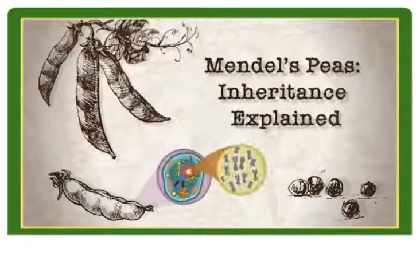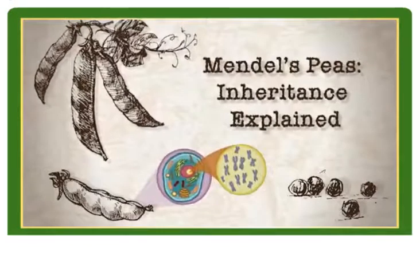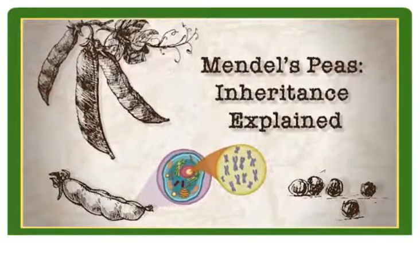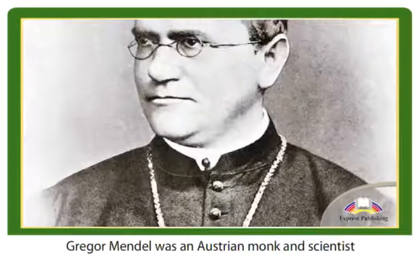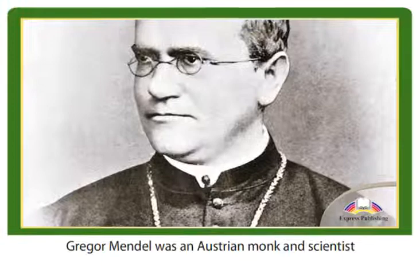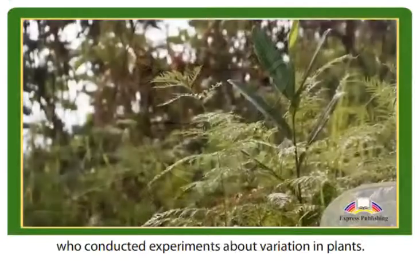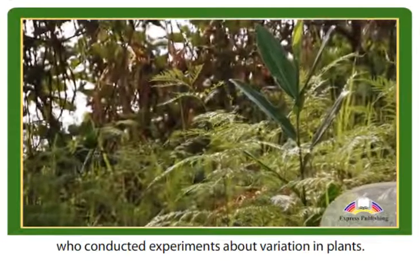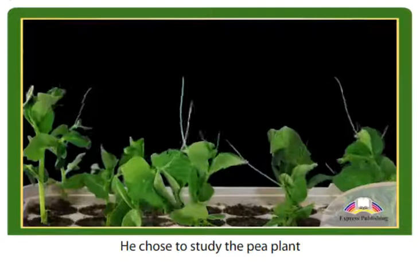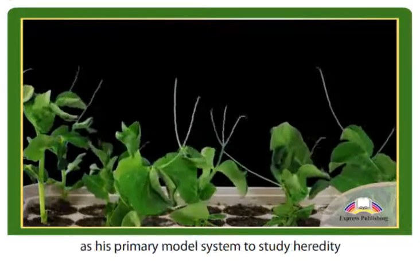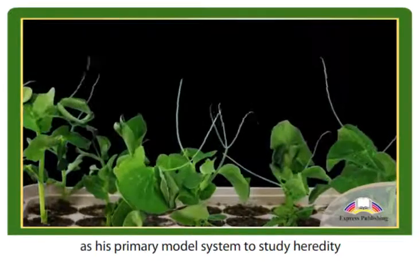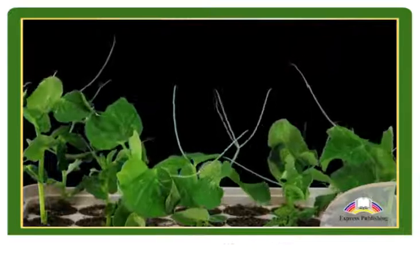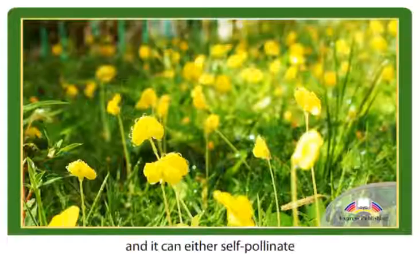Mendel's Peas — Inheritance Explained. Gregor Mendel was an Austrian monk and scientist who conducted experiments about variation in plants. He chose to study the pea plant as his primary model system to study heredity because it grows quickly and produces many seeds.